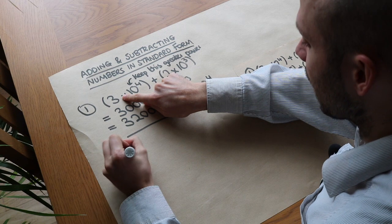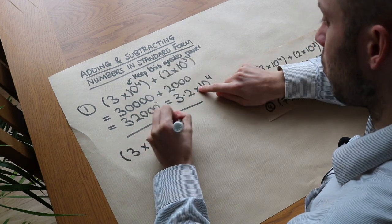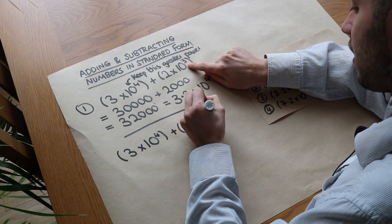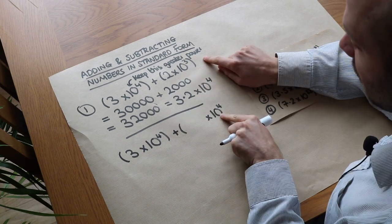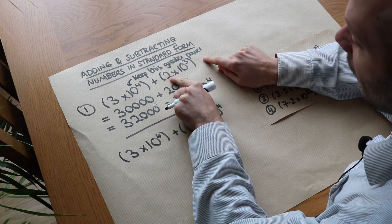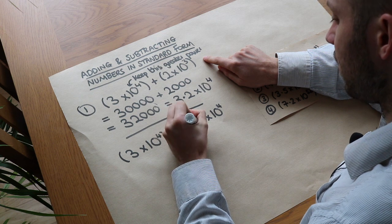So let's keep this as it is. We have 3 times 10 to the 4. But we want to make sure that this is 10 to the 4. Now we made that 10 times bigger to get to 10 to the 4. So to compensate, I have to make that 10 times smaller. So 2 divided by 10 is 0.2.